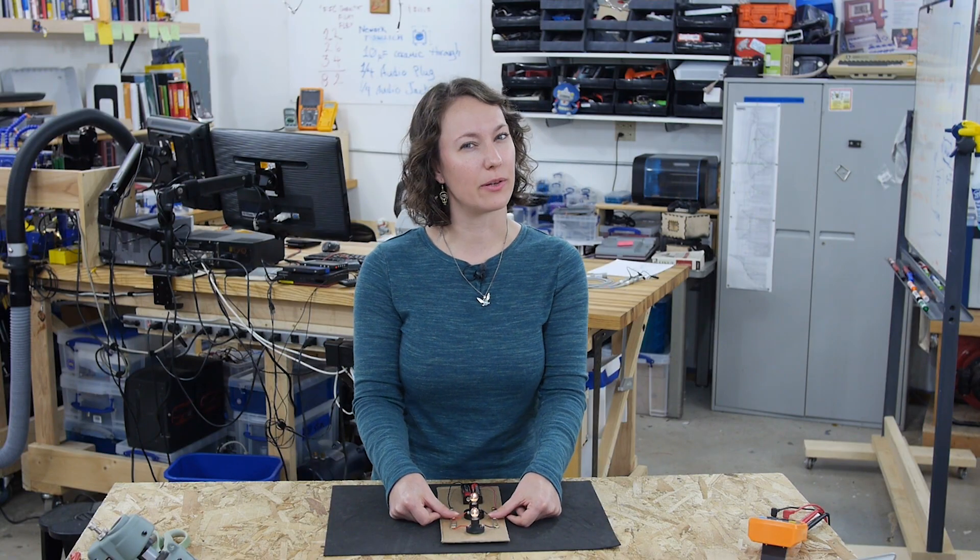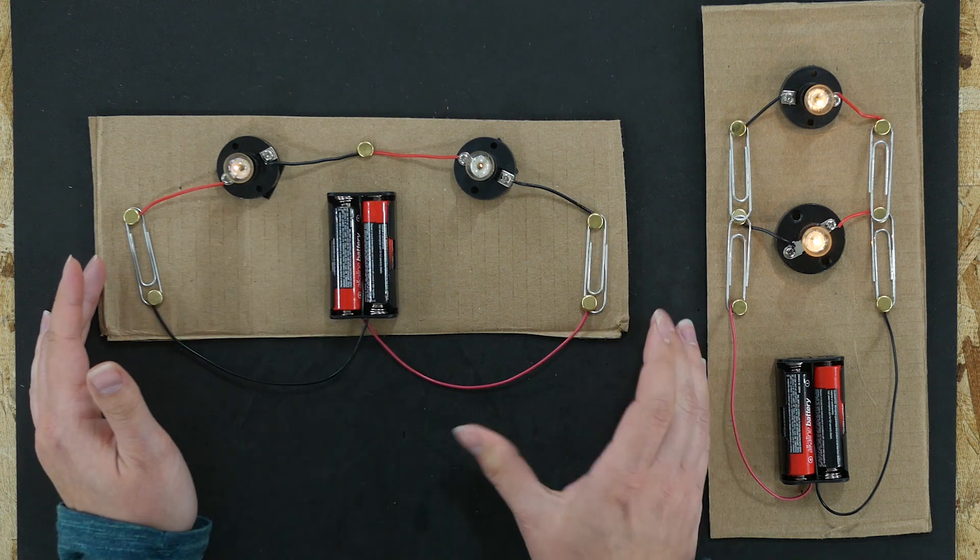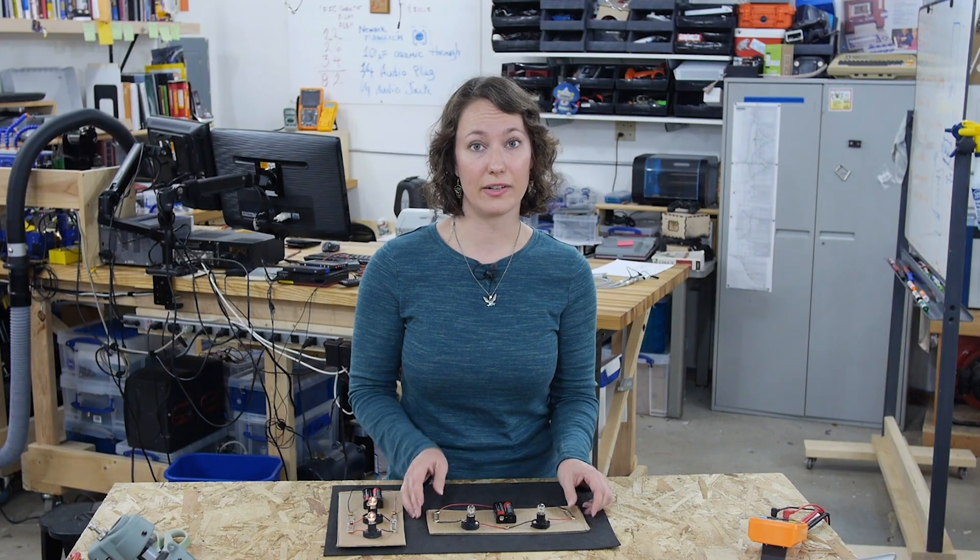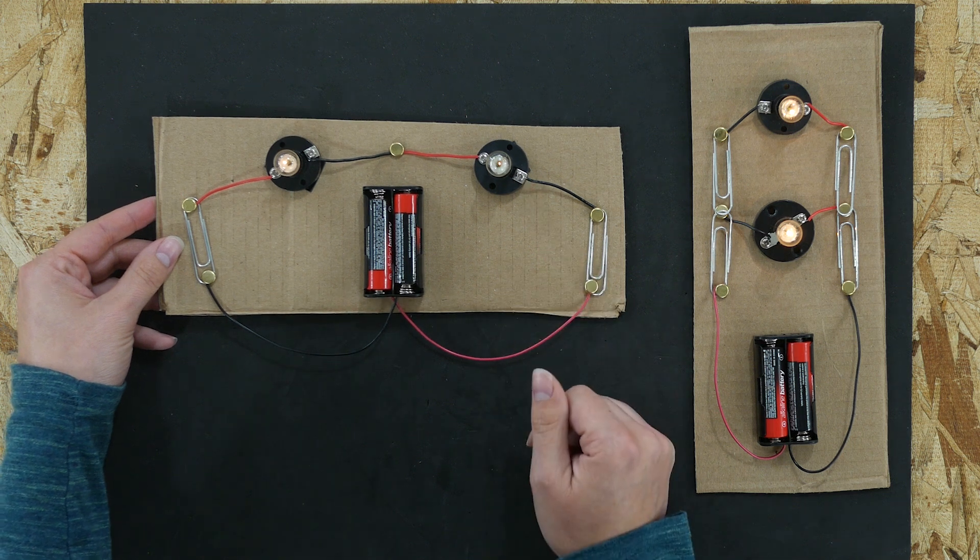But what if I hooked them up a different way? This time the light bulbs are in line or in series. Still two batteries, still two lights. But look at the light bulbs. This one's pretty dim. Why is that?